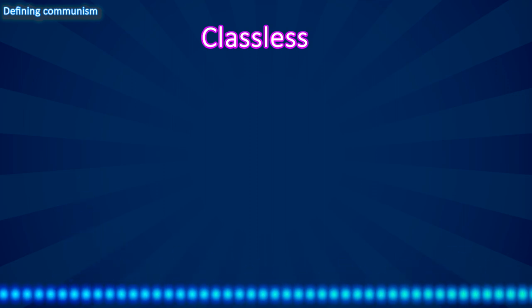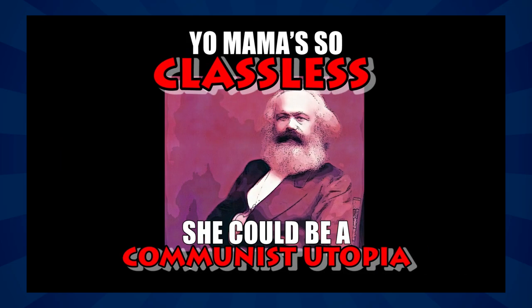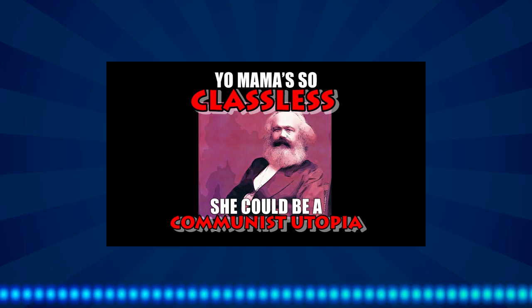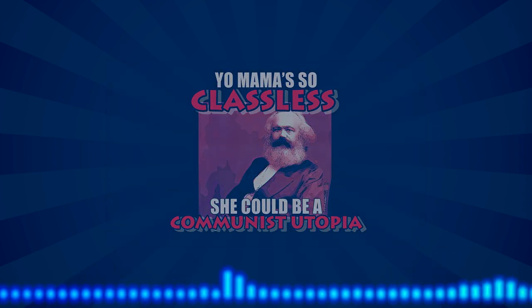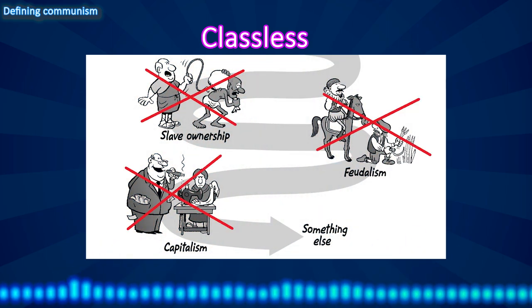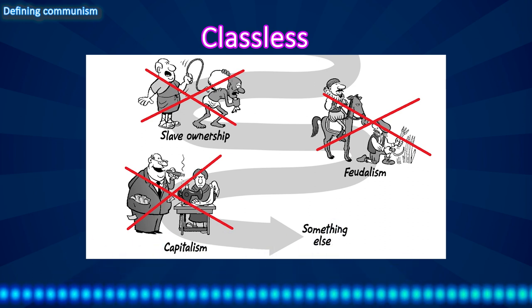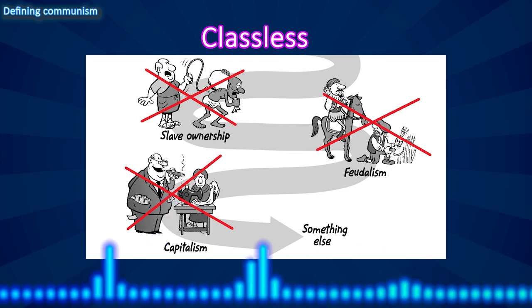The next feature of communism is that it is classless. Classless, as it applies to communism, means that there are no economic classes. For thousands of years, humanity has been divided into separate classes, with a minority ruling class that enriches itself off the work of the majority laboring class. Slave owners enriched themselves off slaves. Feudal lords enriched themselves off serfs, and capitalists enriched themselves off workers. All of these are class divisions, and eliminating class means eliminating these divisions, so that humanity is no longer divided between exploiters and exploited.